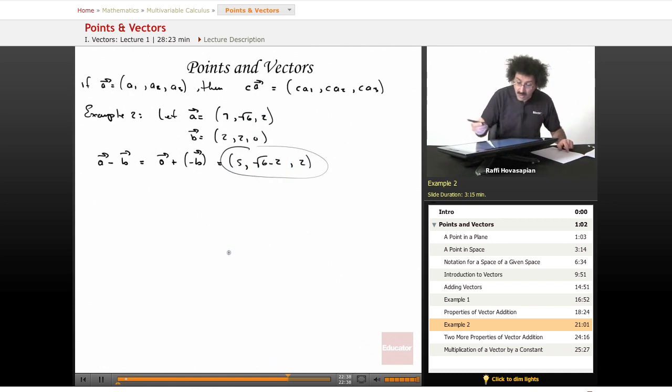A minus B is that. Well, how about if we do 7 times A, like we said? Well, 7 times A, A is 7, radical 6, and 2. It just means take 7 and multiply each of those components by 7. So we get 49, we get 7 radical 6, and we get 14. That's it.